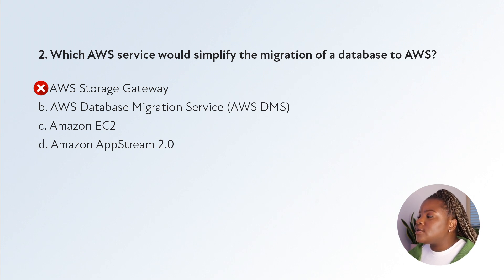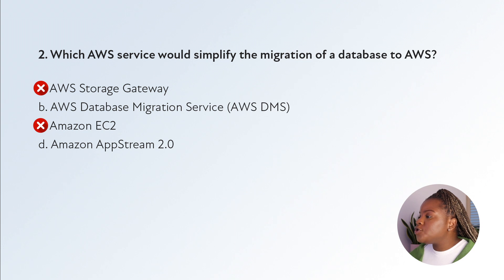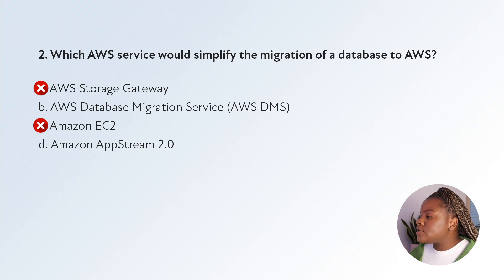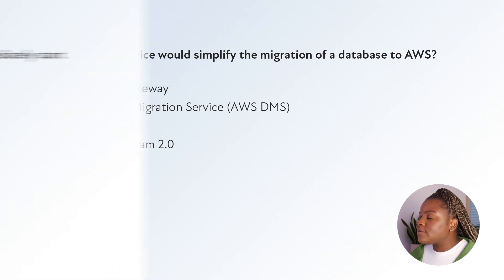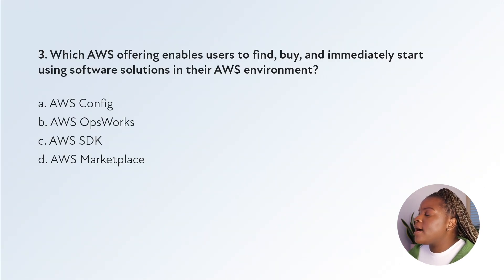Option C, Amazon EC2, is for compute capacity, so it's not for simplifying database migration. Option D, Amazon AppStream 2.0, is not a popular service in the exam questions I've done, but it's always good to know what it is. AppStream 2.0 is a fully managed non-persistent desktop and application virtualization service — not a database migration service. So the right answer is AWS Database Migration Service.